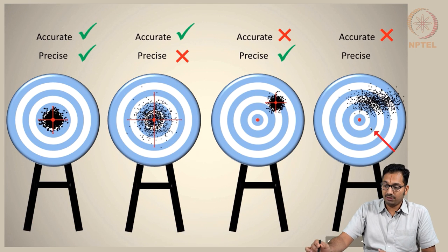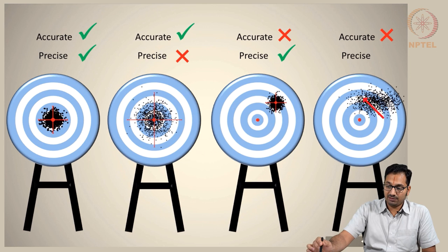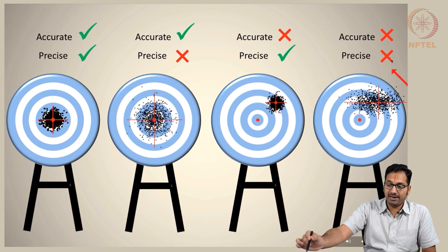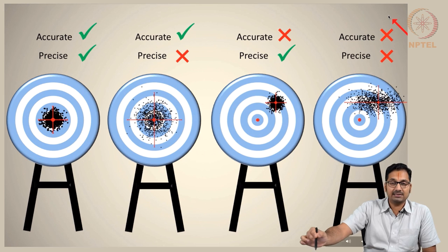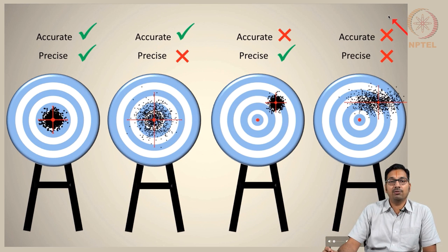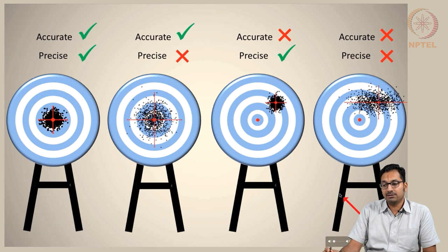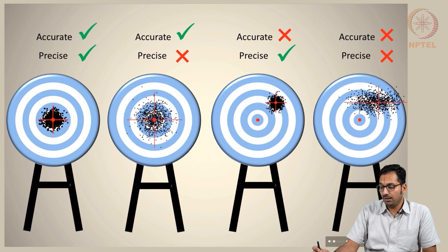In the fourth case, if you see the true value at the center, the average for these measurements is far away and the spread is also bad, resulting in an imprecise and inaccurate measurement. This is a very bad scenario to be existing or working in.